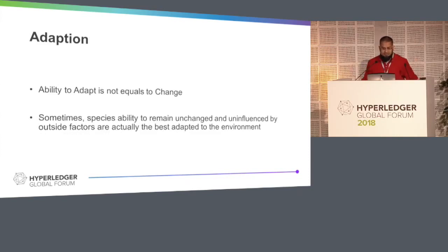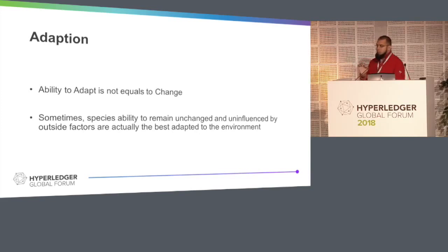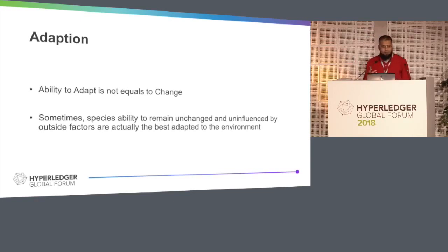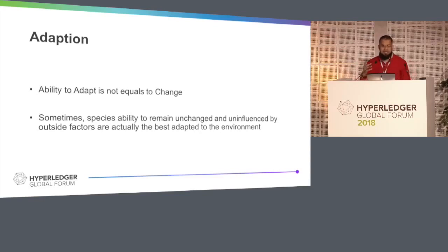Adaptation is simply the ability to change. Sometimes a species' ability to remain unchanged is what's required for their survival and growth. So when we talk about evolution, we always talk about change, but sometimes we need to resist — like resisting SegWit2 or something — because this is the right environment, the right ingredients and traits we need to survive. This is very important when talking about the evolution of cryptocurrencies.